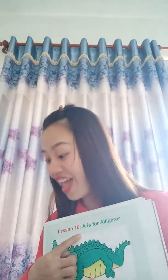Today we will learn about the letter A. What's the letter? Can you tell me? Good job! This is the letter A. A is for alligator. A is for alligator. See — what is this? Oh, it is an alligator!